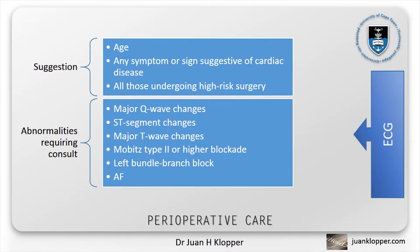The prognostic value of routine preoperative ECGs is unclear. They are of great value if a severe arrhythmia is diagnosed, but the literature is vague on who requires this test. Most units rely on age as the sole determinant for routine testing, based on the fact that the incidence of cardiac disease increases with age. Many units include all patients with a history of cardiac disease, or those with any symptom or sign suggestive of cardiac disease, as well as those who are to undergo high-risk surgery. The group of abnormalities to watch out for include major Q-wave changes, ST segment changes, major T-wave changes, Mobitz type 2 or higher block, left bundle branch block, and AFib.